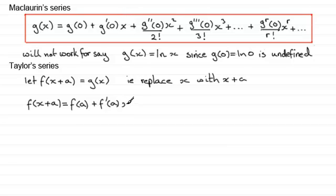When it comes on to this term, by a similar argument, what we get is f double dash of a divided by 2 factorial, multiplied by x squared. The next term will be f treble dash of a over 3 factorial, multiplied by x cubed. And it goes on like this.